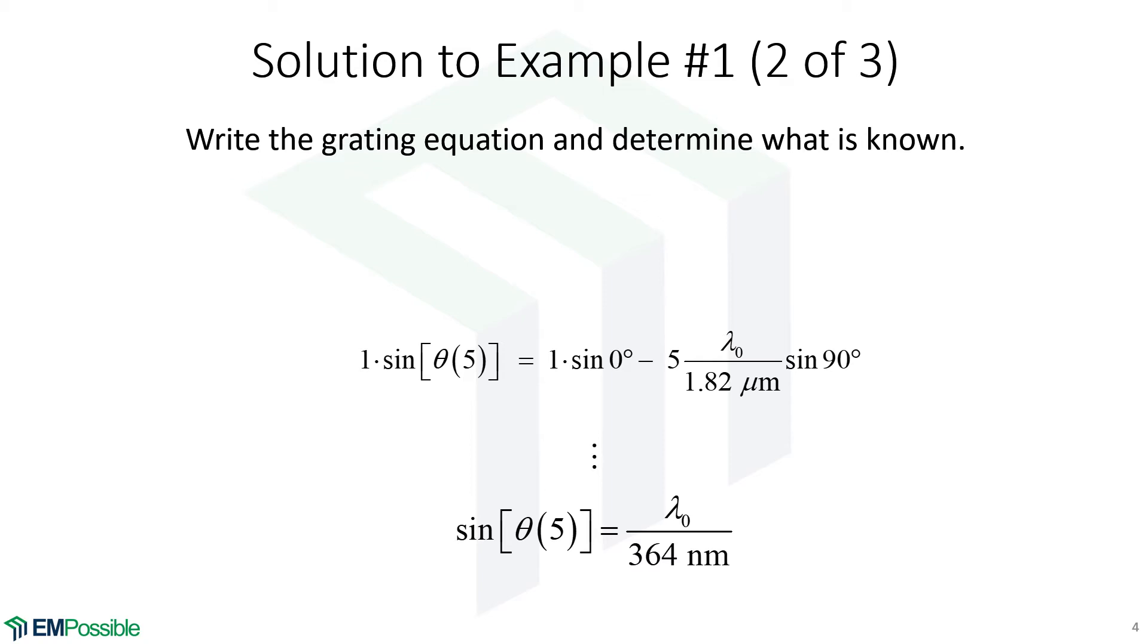So our equation reduces to this. And now we have to ask the question, what is the biggest value for lambda naught that lets this theta for the fifth order diffracted mode be a real angle, a real number?